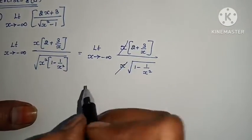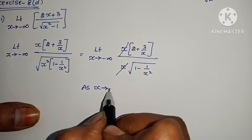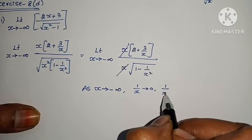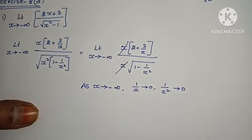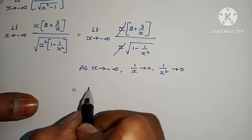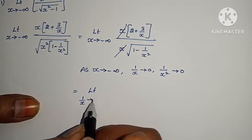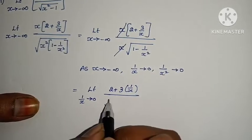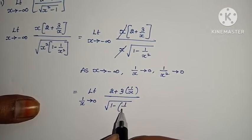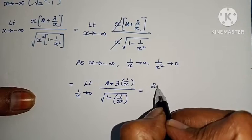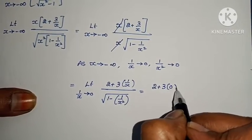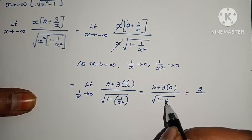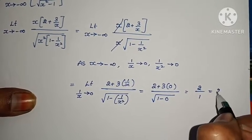After x and x cancel, as x tends to infinity or x tends to minus infinity, 1/x tends to 0 and 1/x² tends to 0. Applying the limit: (2 + 3/x) becomes (2 + 0) = 2, and root of (1 minus 1/x²) becomes root of (1 minus 0) = root 1 = 1. So the answer is 2/1 = 2.